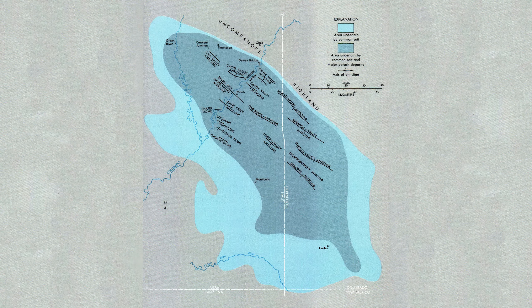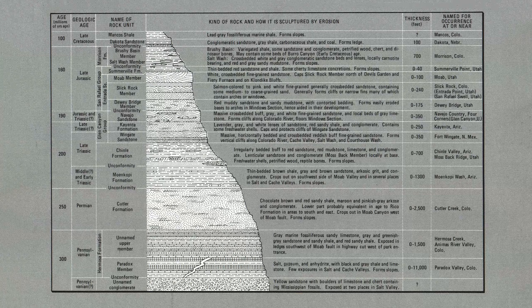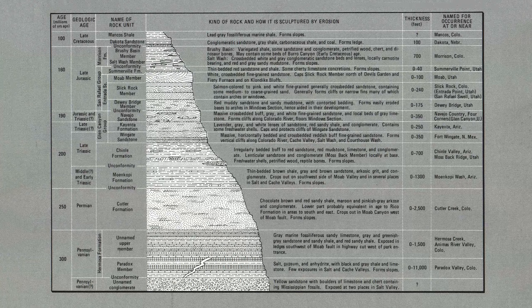The water brought in sediment, which settled at the bottom of the basin, as well as layers of salt that remained after the water evaporated. Over time, influxes of water from the nearby sea brought in more salt, which precipitated to the bottom of the basin. At least 29 separate influxes of salt water into the basin collected thousands of feet of salt in the basin.